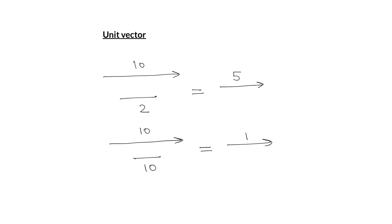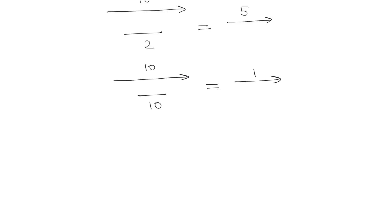A unit vector is a vector of magnitude 1 in the direction of the given vector. It is found by dividing the given vector by its own magnitude. If we have vector A and divide it by its own magnitude a, we get a vector of magnitude 1 in the direction of A, and that is represented by A-cap (â).